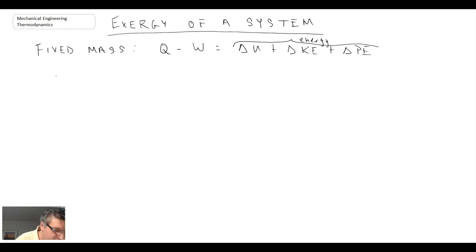So the exergy is the exergy associated with these different forms. The exergy for this type of fixed mass system we will use phi to represent, and it will be equal to the exergy of the internal energy plus exergy due to kinetic energy plus exergy due to potential energy.